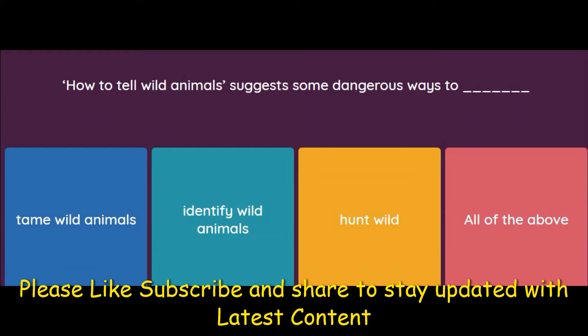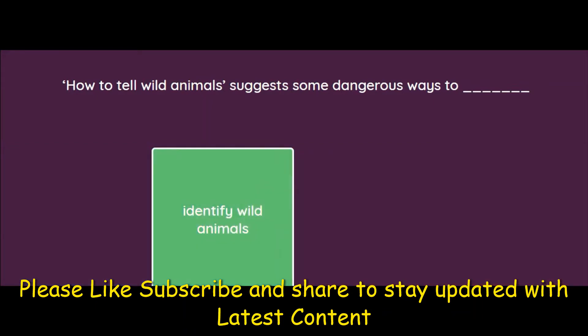What does 'How to Tell Wild Animals' suggest? Options: Dangerous ways to tame wild animals, identify wild animals, hunt wild animals, or all of the above. The poem is actually about how to identify wild animals — for example, if a crocodile sheds tears while eating, or a bear hugs you. These are dangerous ways to identify animals. So the answer is: identify wild animals.